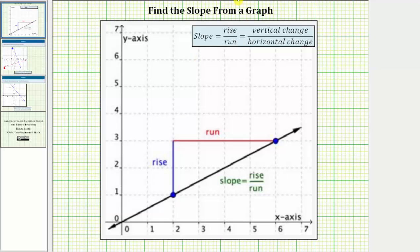Looking at the graph of the line below, let's determine the slope using the two points plotted on the line. If we move from the point on the left to the point on the right, notice how we first have to move up two units, which means the vertical change or rise is positive two. And then from here, we have to move right four units, which means the horizontal change or run is positive four.